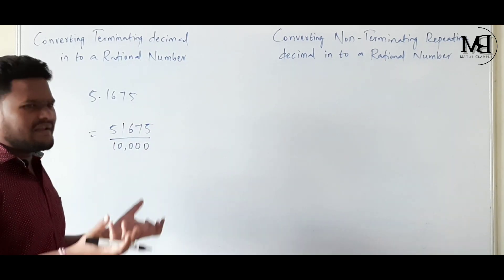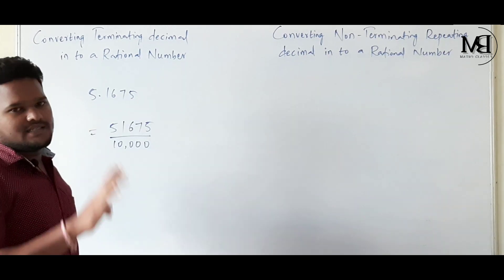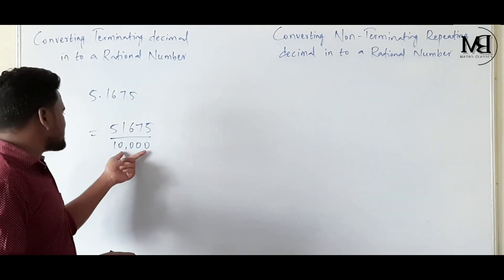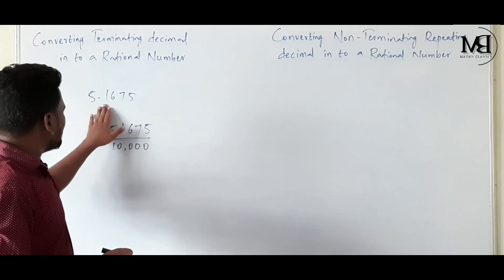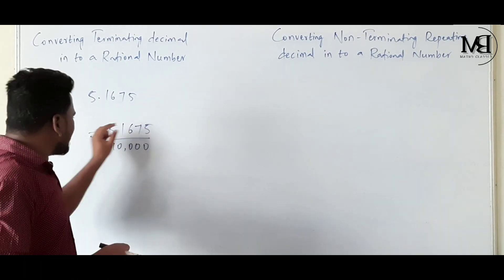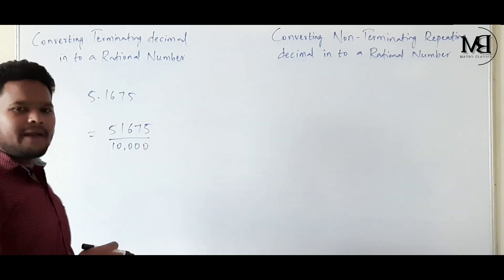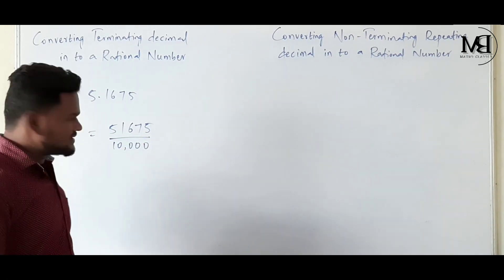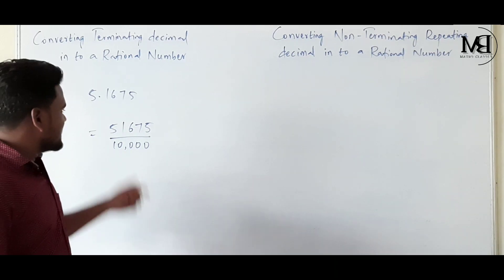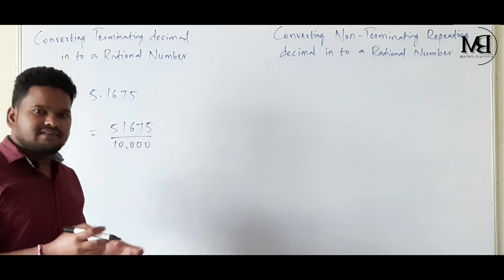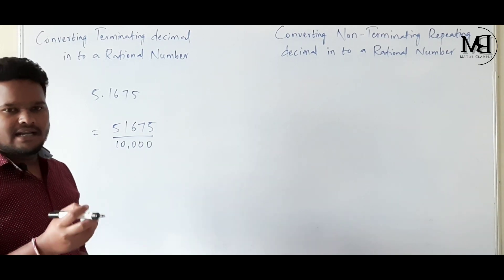Simply, in the decimal part there are 4 digits, so we are going to get 4 zeros in the divisor. So 5.1675 can be written as 51,675 divided by 10,000. Hence this is in the form of P by Q, and 51,675 divided by 10,000 is a rational number.